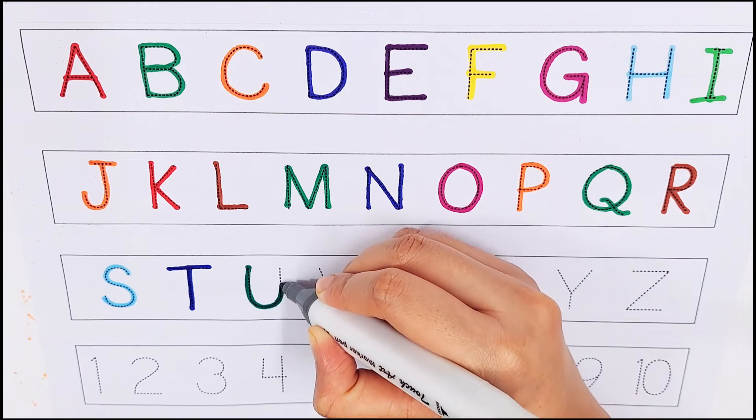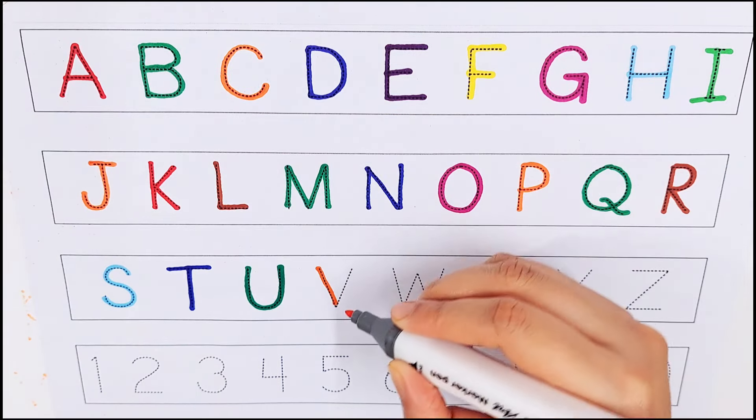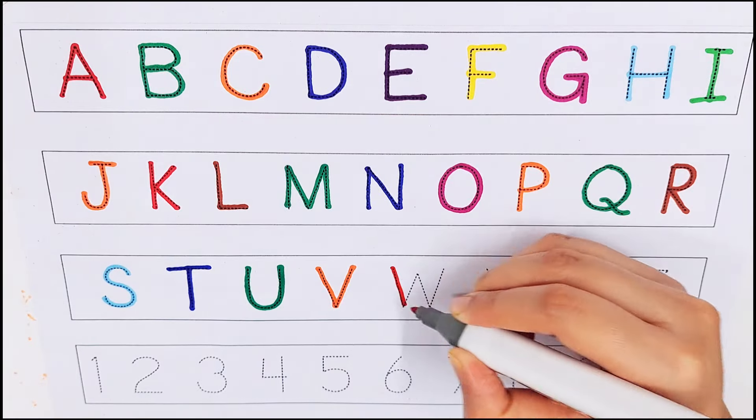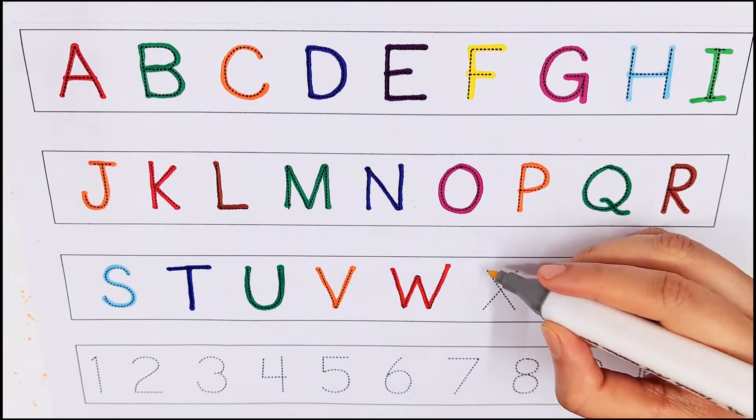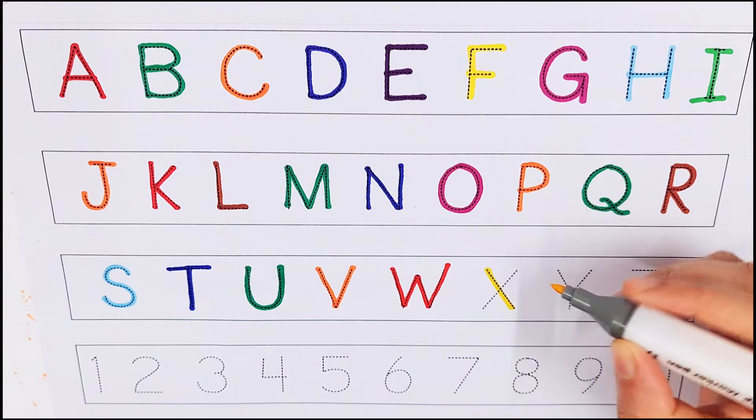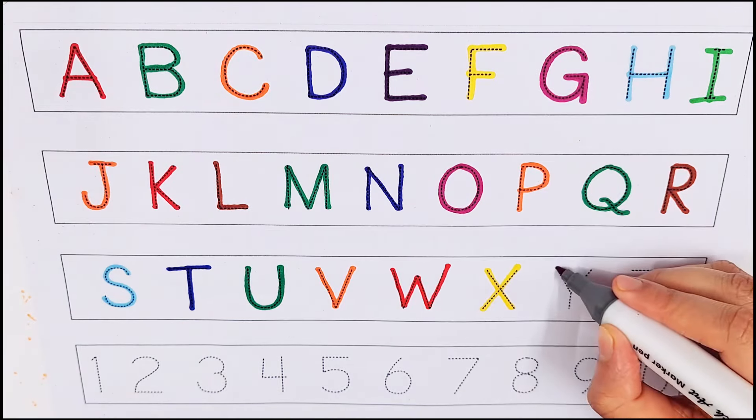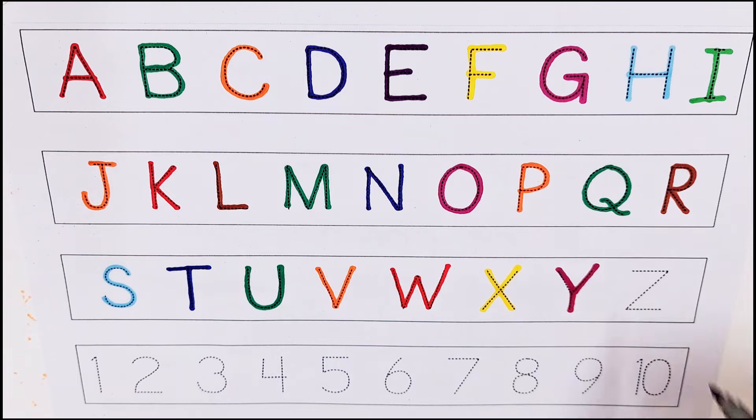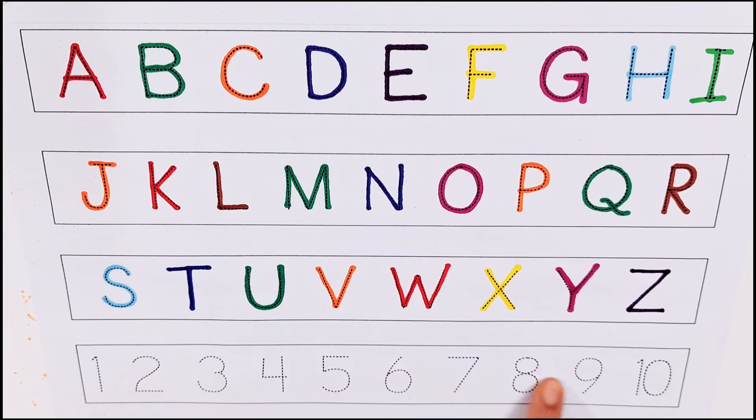U, U for university. V, V for vanilla. W, W for watermelon. X, X for xylophone. Y, Y for yogurt. Z, Z for zipper. Let's try to count some numbers.